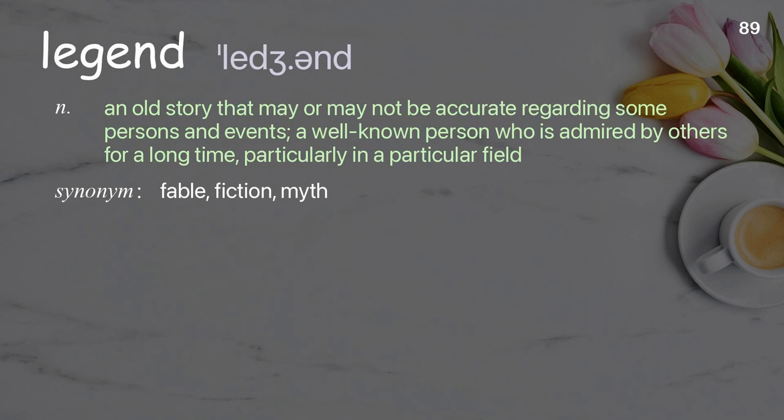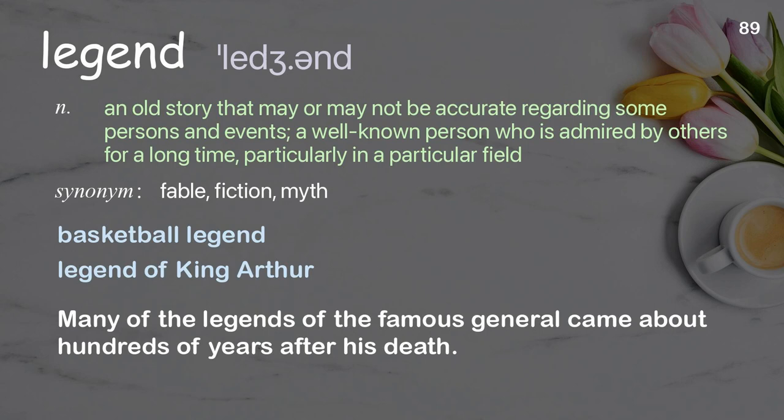Legend: an old story that may or may not be accurate regarding some persons and events; a well-known person who is admired by others for a long time, particularly in a particular field. Examples: basketball legend; legend of King Arthur. Many of the legends of the famous general came about hundreds of years after his death.